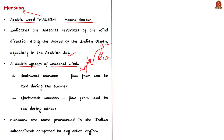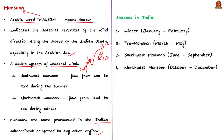Monsoons are more pronounced and predominant in the Indian subcontinent compared to any other region, and seasons in India are classified according to monsoons. India primarily has four seasons: winter season (January–February), pre-monsoon season (March–May), southwest monsoon season (June–September), and northeast monsoon season (October–December).